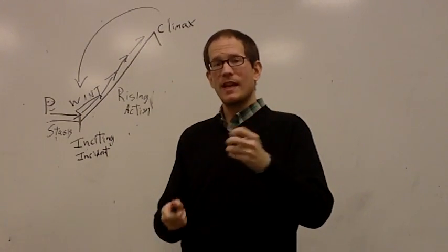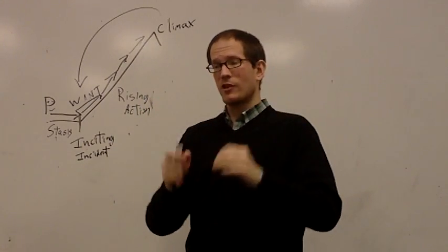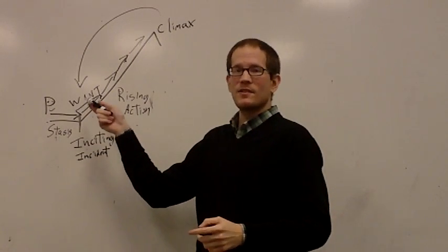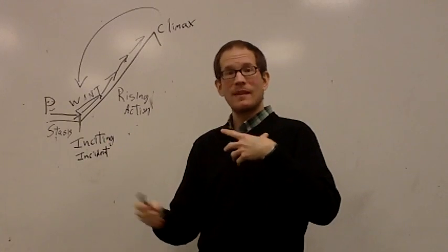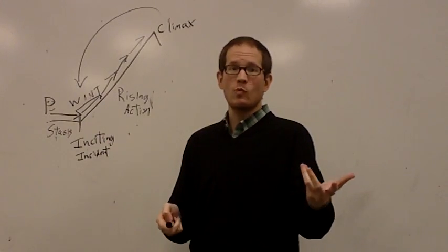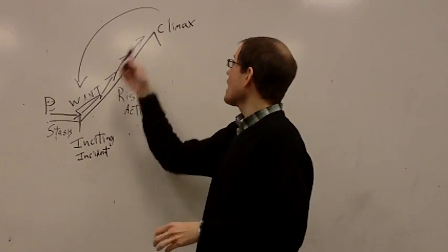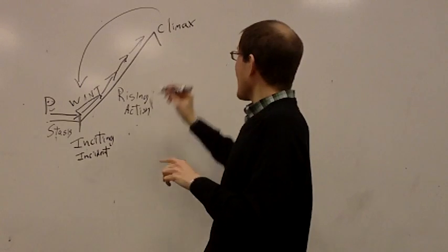But if you do have those things, it will be taut and clear and very sharp. So here at the beginning, inciting incident, a want is established. Protagonist tries to get it. Other things happen. There's plenty of other characters. They may have wants as well. But they are secondary to the protagonist and his or her wants. And then at the climax, they have to get it or they don't.